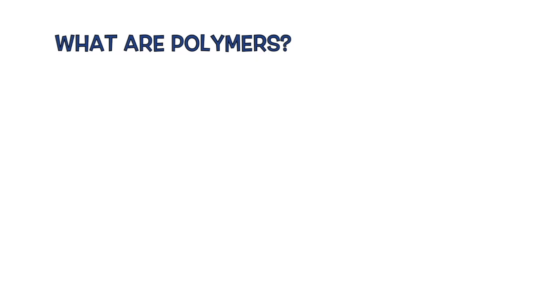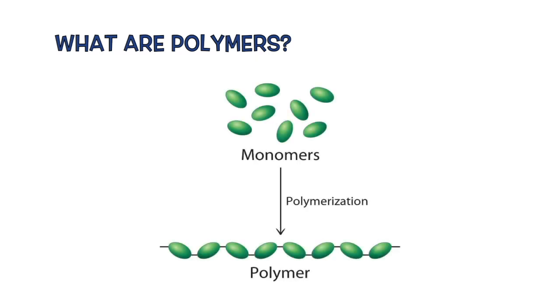First, what is a polymer? A polymer is a large molecule composed of a chain of smaller molecules called monomers that are all similar to one another.